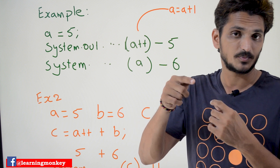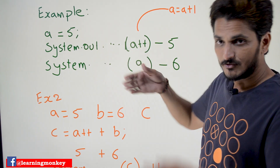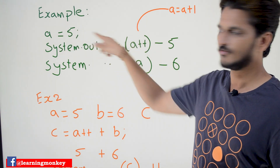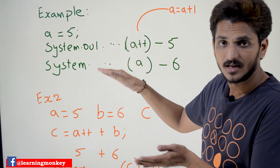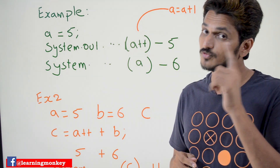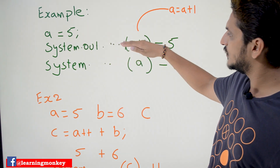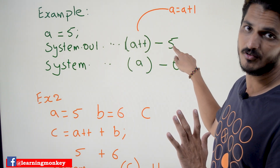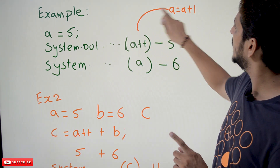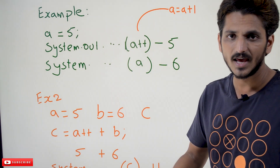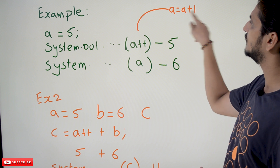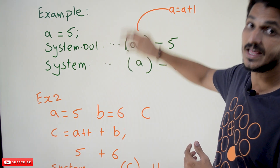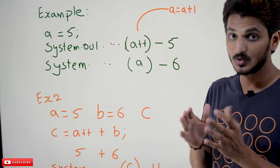Understand postfix properly — most people get confused here. In System.out.println(a++), the meaning is: first assign the current value of a to this statement. The value of a is 5, so it displays 5. After this statement completes, then increment the value of a — that is a = a + 1. So a becomes 6 after the statement.